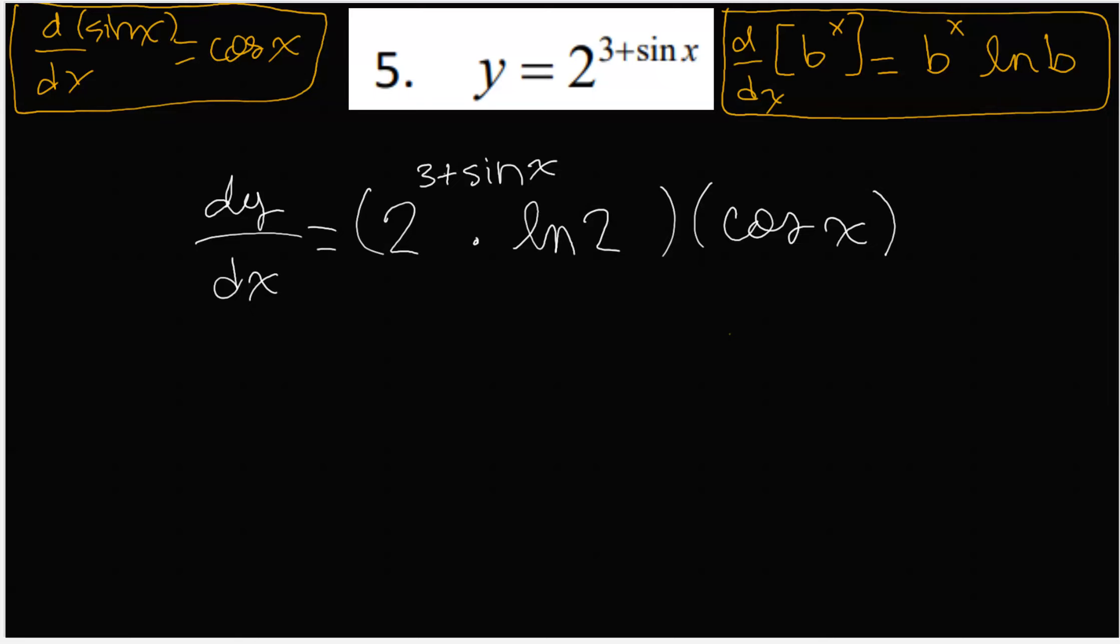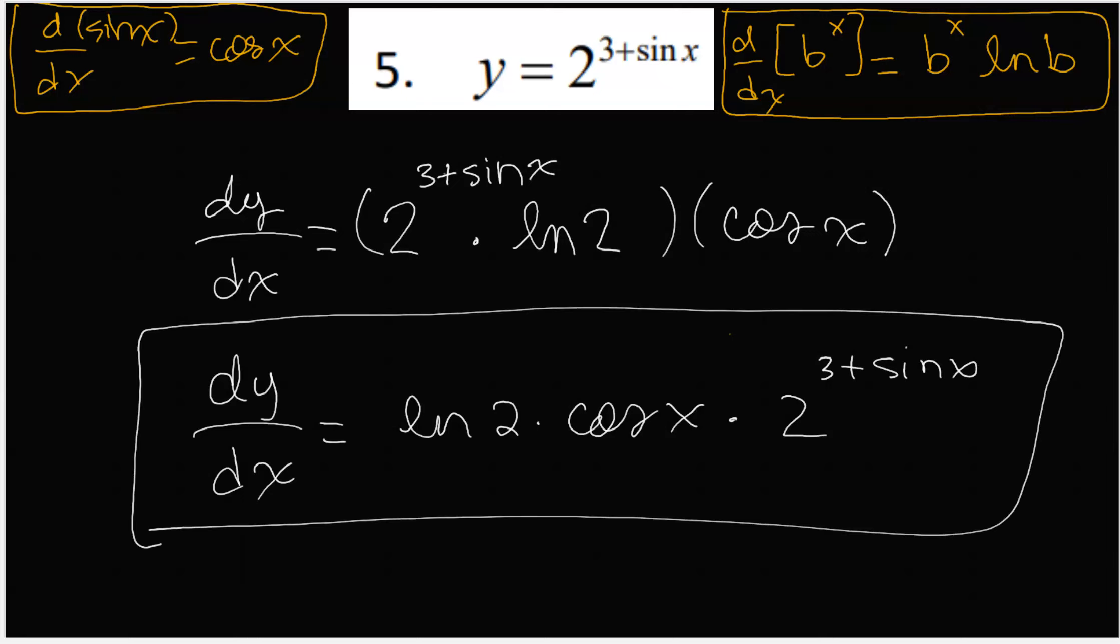And the derivative of 3 is 0, so nothing there. So that is it. What can you do with it? Really, nothing. If you want to, you can write it as ln 2 times cos x times 2 to the 3 plus sin x. I mean, really, it's exactly the same thing, however you want to write that.